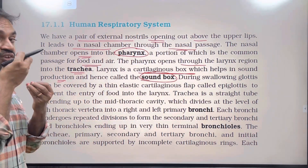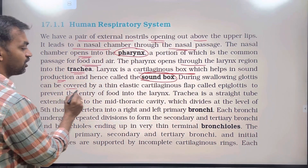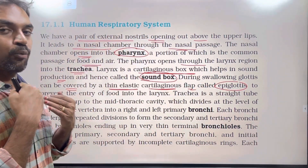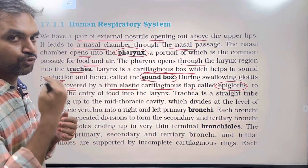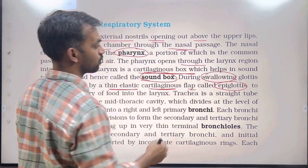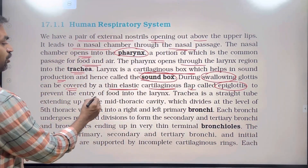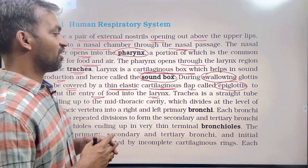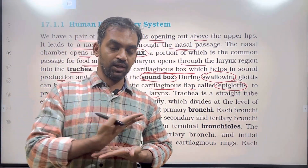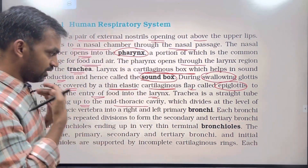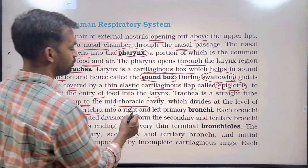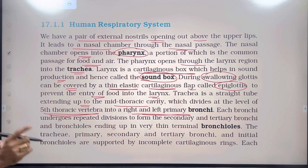During swallowing, the glottis can be covered by a thin elastic cartilaginous flap called the epiglottis, to prevent the entry of food into the larynx. The trachea is a straight tube extending up to the mid-thoracic cavity.